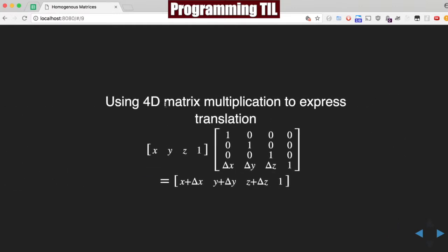And if we have a 4D matrix for translation, so we'll have 1, 1, 1, basically the identity, and then in the last row we'll have delta X, delta Y, delta Z. You'll see that the new vector prime here is X plus delta X, Y plus delta Y, Z plus delta Z, and 1.